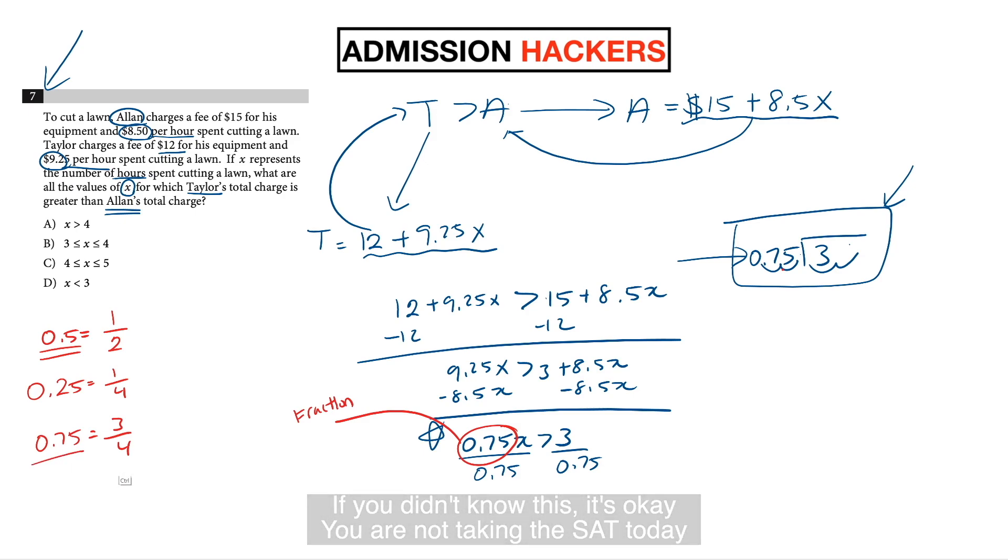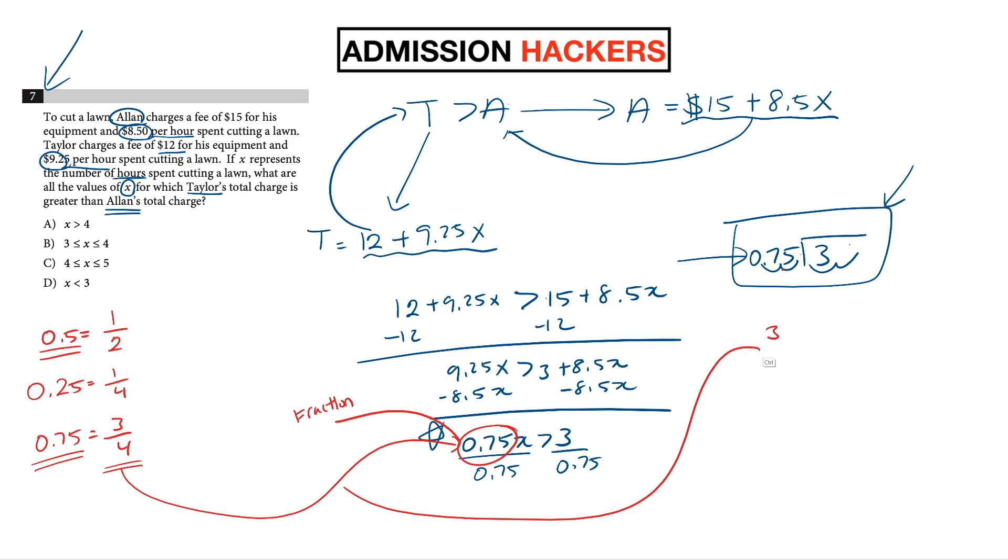So you can just substitute it in there and it's going to be the same thing. So what would it look like if we substitute it in? It would be 3 over 4 times X is greater than 3. And now you don't have to do all this crazy stuff. You can just multiply by the reciprocal and get rid of the 3 fourths, which now becomes X is greater than 4. And that's going to be the answer, which is going to be choice A. Does that make sense?